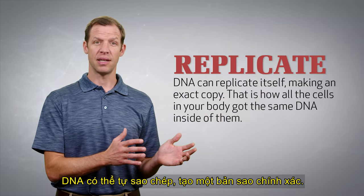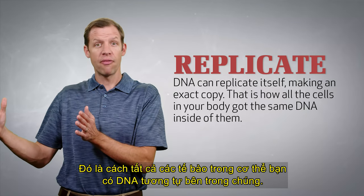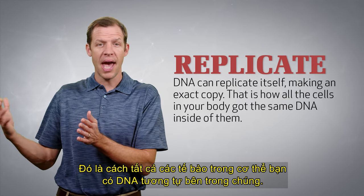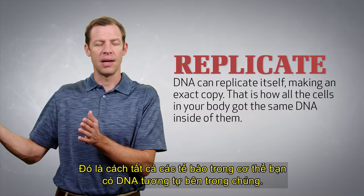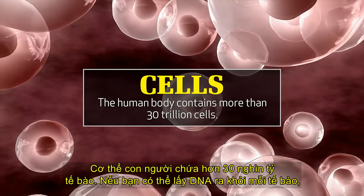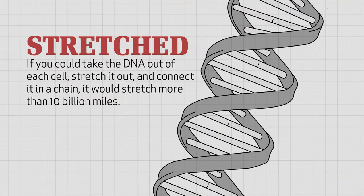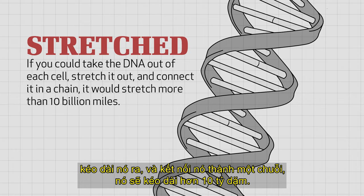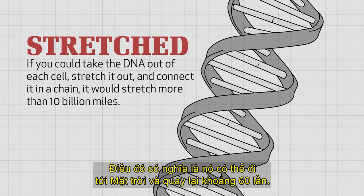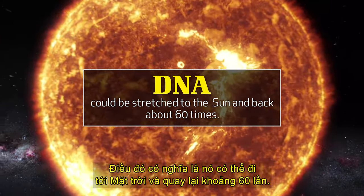Doesn't it just make sense that God's data storage device is the best one that anybody's ever seen? DNA can also replicate itself, making an exact copy. And that's how every single one of the cells in your body has the same DNA. The human body contains more than 30 trillion cells. If you could take the DNA out of each one of your cells and stretch it out and connect them in a chain, it would stretch more than 10 billion miles — meaning it could go to the sun and back about 60 times.